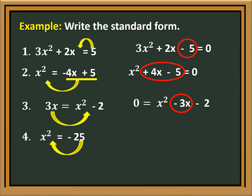Let us transpose negative 4 to the left side of the equation, so it will become positive. Therefore, we will have x squared plus 25 is equal to 0.